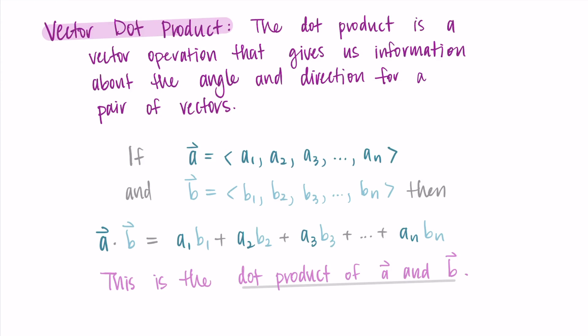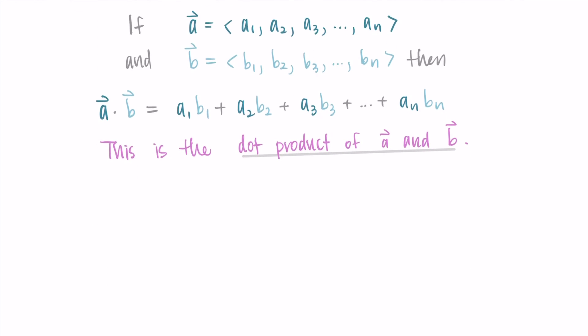So just a few notes before we move on and try an example. The dot product is also called the scalar product or the inner product. These are just other names that you might hear for the dot product.